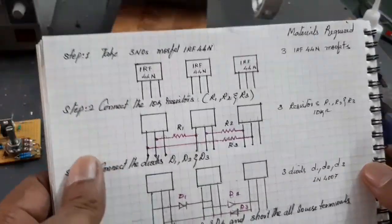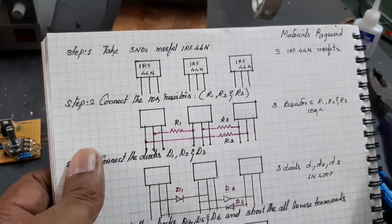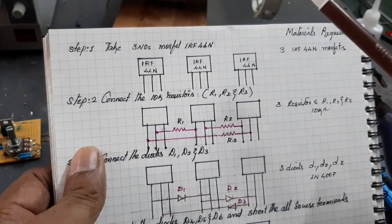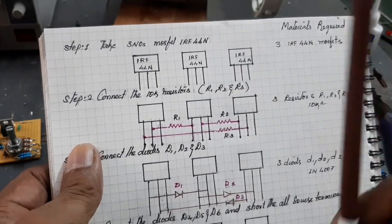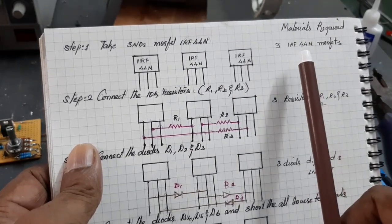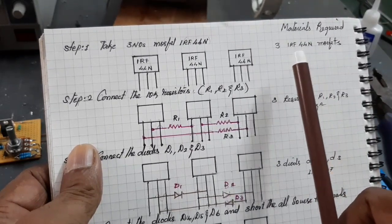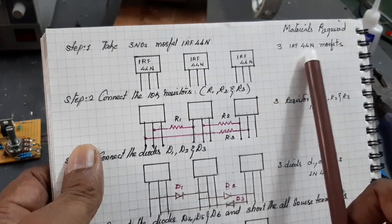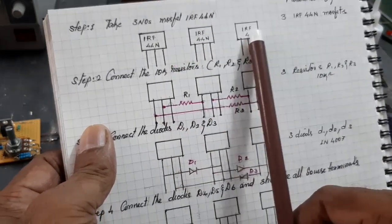Hello friends. Now, I am going to explain how to make a 3-phase BLDC controller. First, the materials required: MOSFETs. 3 MOSFETs IR-44N. Take 3 MOSFETs. Next step.